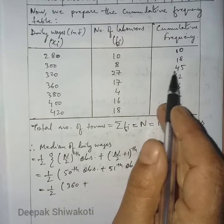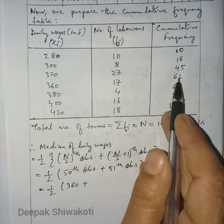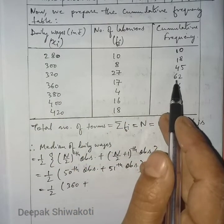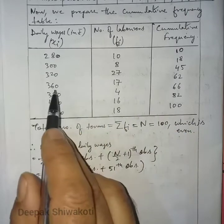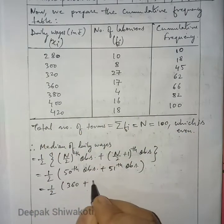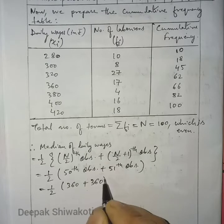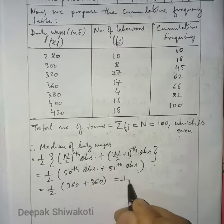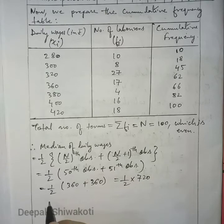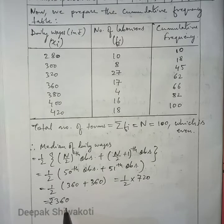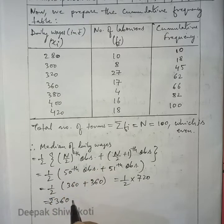Similarly, the 51st observation also lies in the same range (46 to 62), so the 51st laborer also earns 360 rupees. The sum of both observations is 720, and half of that is 360. Therefore, the median of daily wages is 360 rupees.